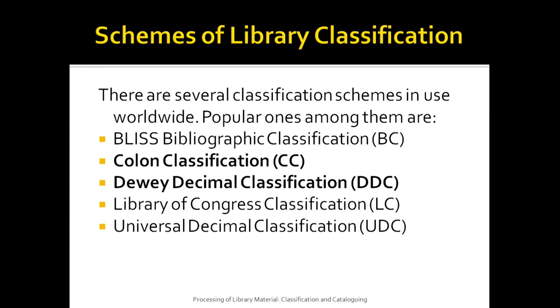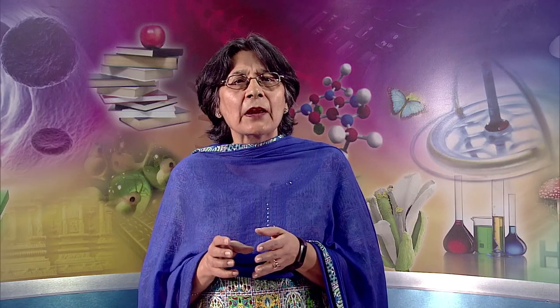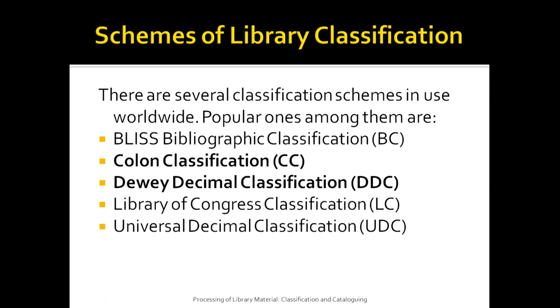Let us now learn about some of the schemes of library classification. There are several library classification schemes used worldwide, but the most popular amongst them are: the Bliss Bibliographic Classification given by Bliss; the Colon Classification given by Dr. S.R. Ranganathan, which is the most popular scheme in India; the Dewey Decimal Classification originated by Melville Dewey, which was the first popular classification scheme; the Library of Congress Classification; and the Universal Decimal Classification, which is based on DDC. Although there are many more classification schemes, we are only talking about a few of them.